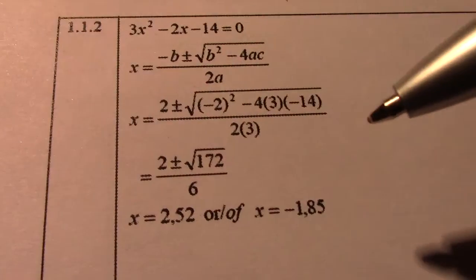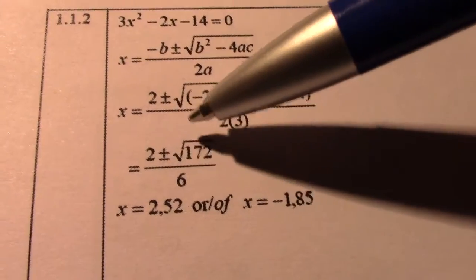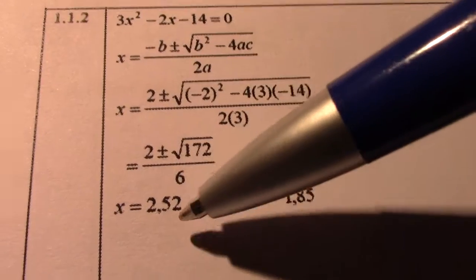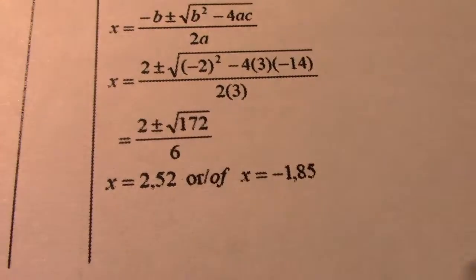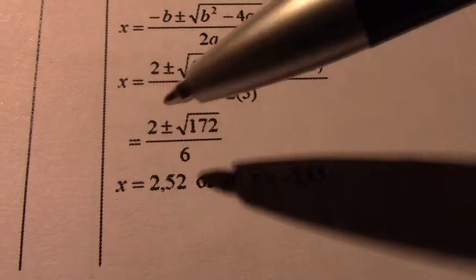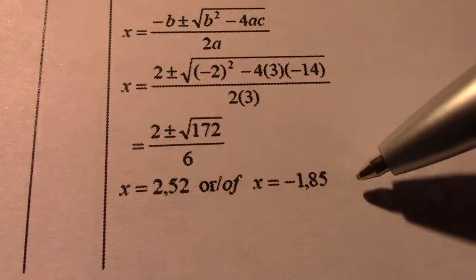2 times 3, which is 6. So, 2 plus square root 172 divided by 6 on my calculator should give me 2.52, and 2 minus square root 172 over 6 should give me negative 1.85.